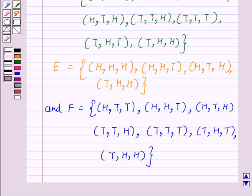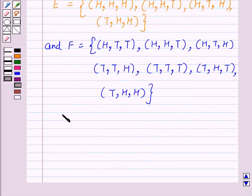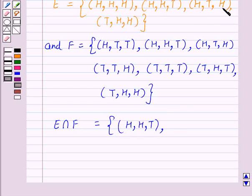Now the elements common to E and F are, that is, E intersection F is equal to: HHT, HTH, and THH.